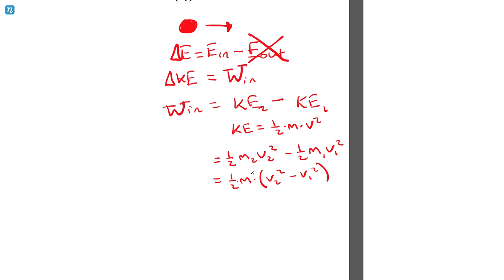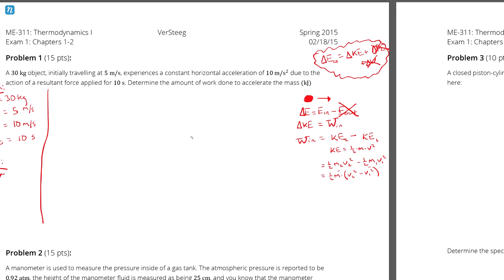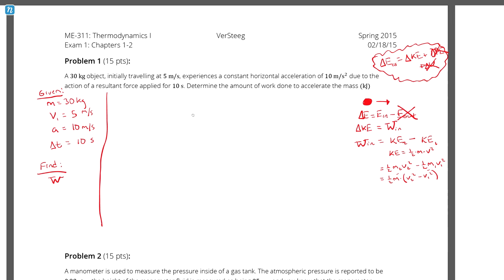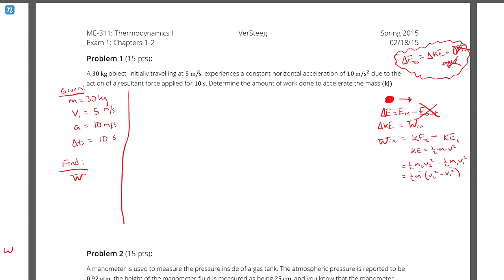In this equation I know the mass and v1, both given. If I had the velocity at state 2 I could calculate work in, but I don't have v2 directly. However, I know enough to calculate it — the object starts at 5 meters per second and accelerates constantly for 10 seconds at 10 meters per second squared.